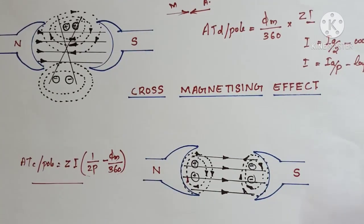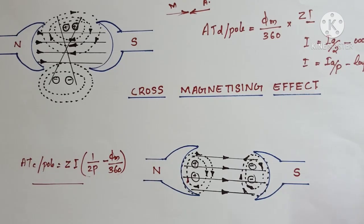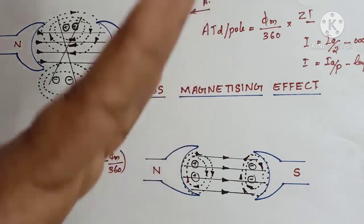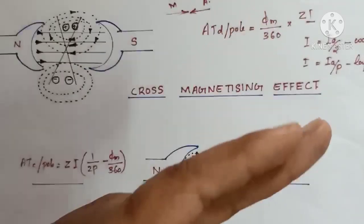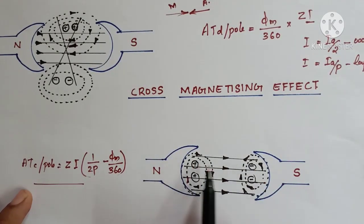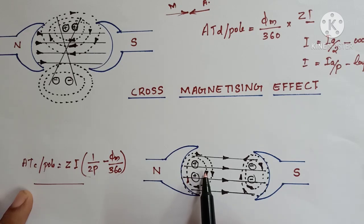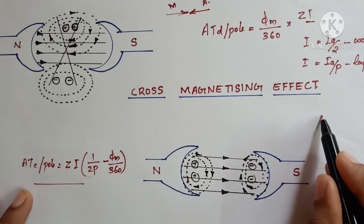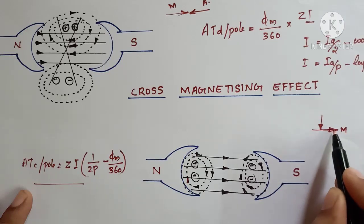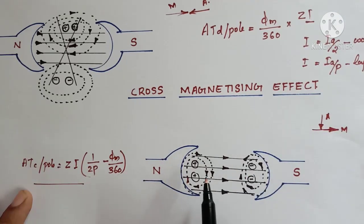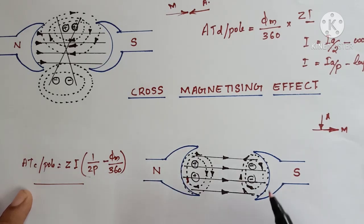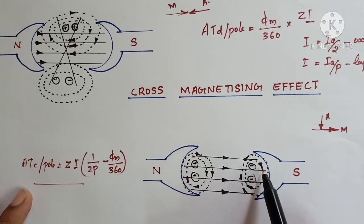The next effect is the cross-magnetizing effect. From the name it is clear that the armature magnetic field will cross the main magnetic field — the action is a perpendicular one. The main field moves from north to south pole, and the armature field rotates such that at a particular point, some portion of the armature field becomes perpendicular to the main magnetic field. Moving in that direction, it crosses and distorts the main field.